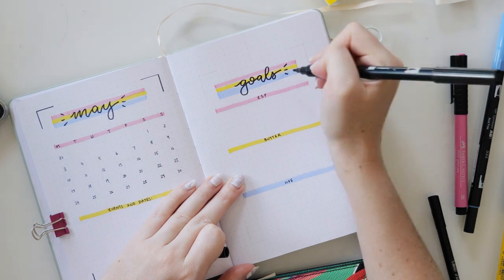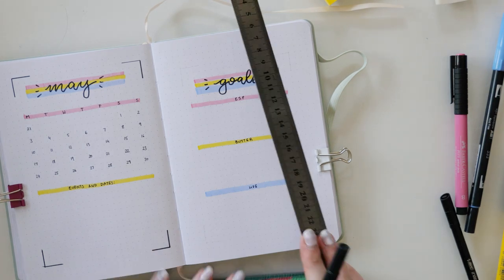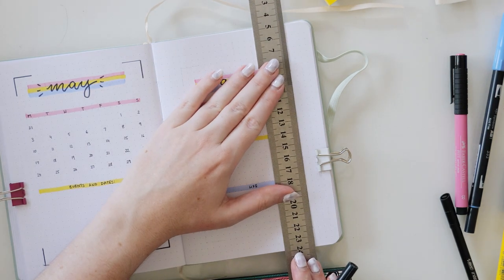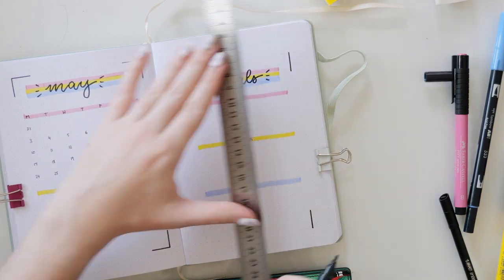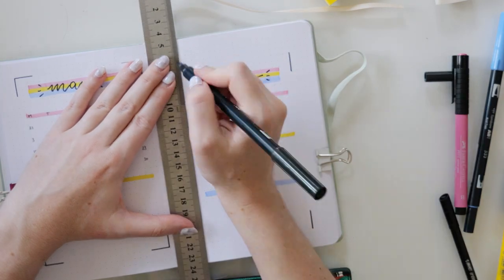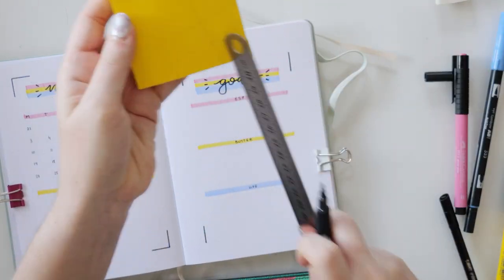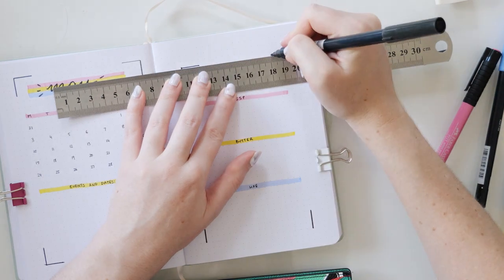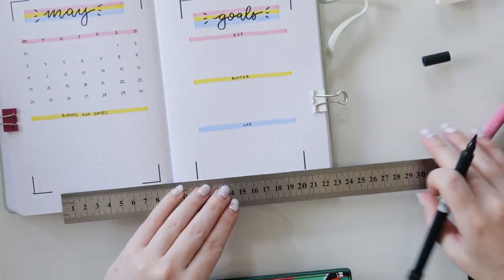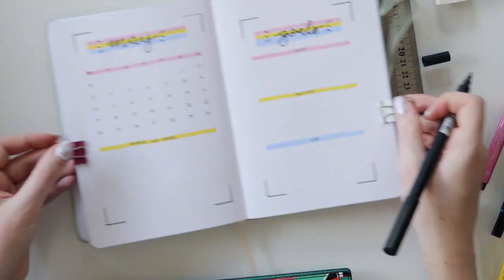Hey, if you are busy like me and you're thinking, I just could not be bothered setting up for May, I've got you. You can go down to the description of this video. You can click on the link to my Etsy store and you can actually buy this download as a printable so that you don't have to do a thing for May. All you have to do is print it out. But I have also set it up so that it will work for any month in any year, not just for May 2021.